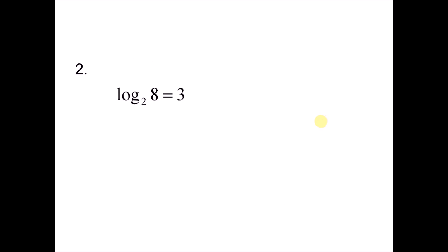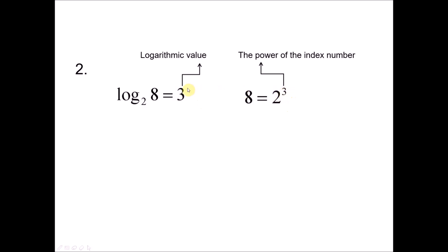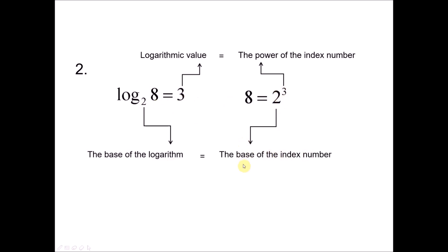Note 2: given log base 2 of 8 equals 3, rewriting as 8 equals 2 to the power of 3 reveals that the logarithmic value (3) is the same as the power of the index number. Also note that the base of the logarithm (2) and the base of the index number (2) are always the same when converting between these two forms.